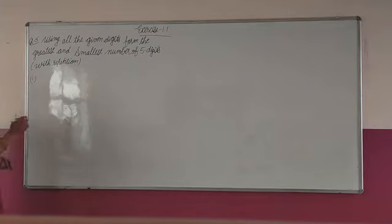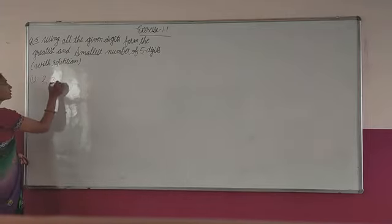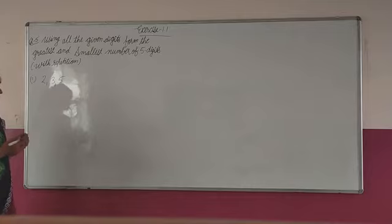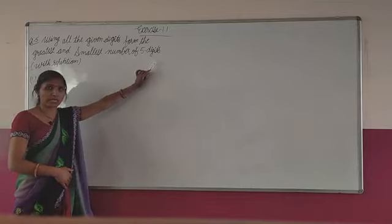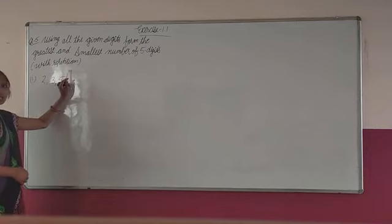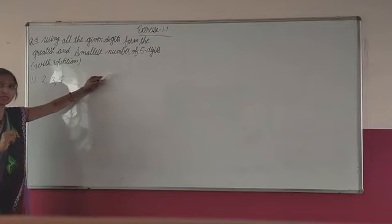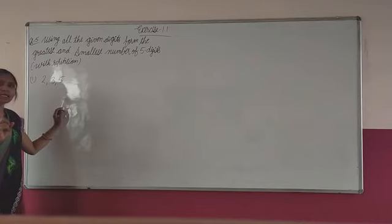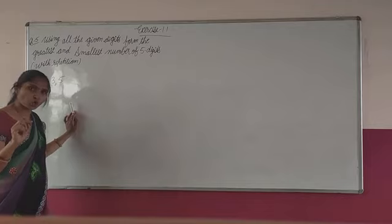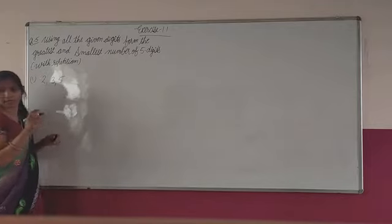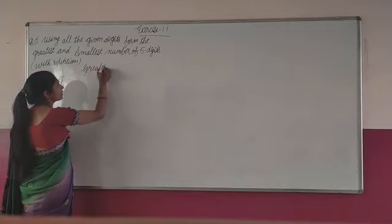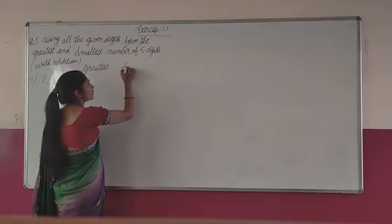First part of this question has digits 2, 3, 5. In this part, 3 digits are given, but we need to form a 5-digit number. Repetition is allowed. Using all the digits, at least one time each digit must be used. We need to form one greatest number and one smallest number.